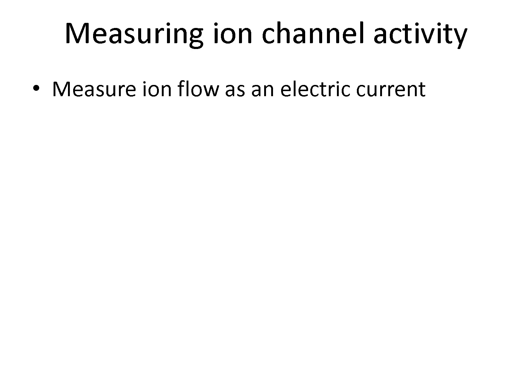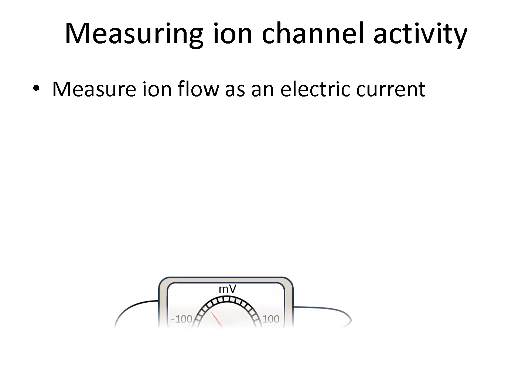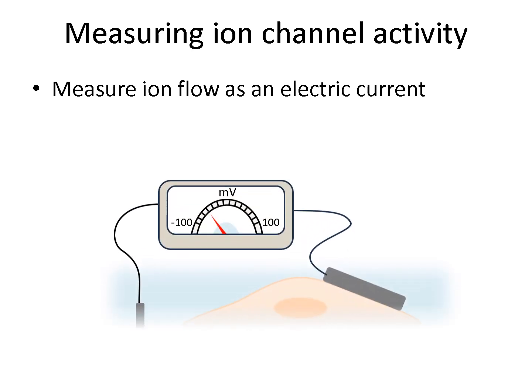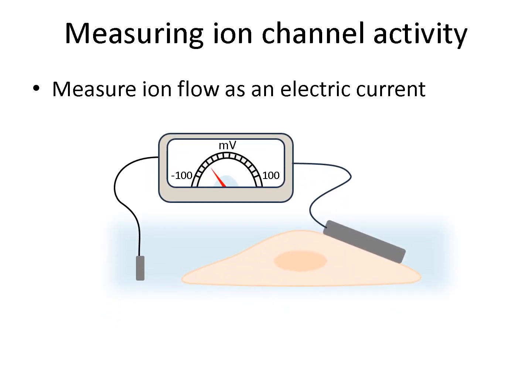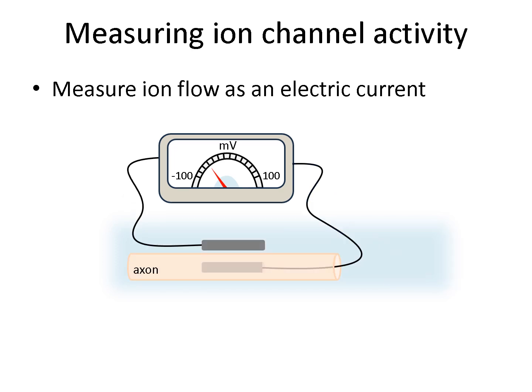The earliest measurements relied on placing an electrode on the surface of a cell and measuring changes in voltage. The early studies of Hodgkin and Huxley on the squid giant axon used a fine wire which was inserted inside the axon along its length, and changes in membrane potential were measured.